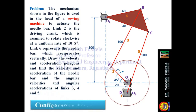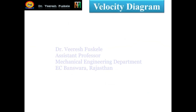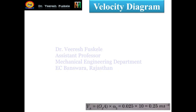In today's lecture we will only be looking at the velocity diagram; in the second part we will look at the acceleration diagram. To draw the velocity diagram, we are given the angular velocity of link O2A, and from that we calculate the linear velocity using the formula V = Rω. So the velocity of point A relative to O2 is: O2A × ω2 = 0.025 × 10 = 0.25 meters per second.